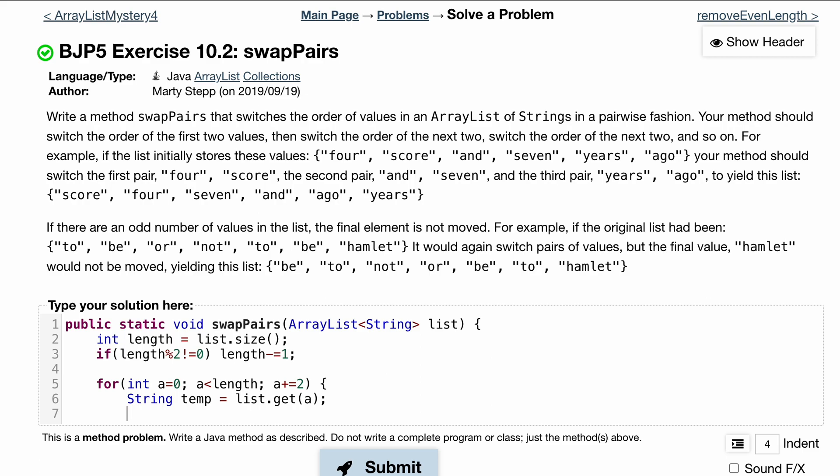Now we're going to do our swap. So we're going to do list.set and we're going to pass in the place of our current index, and we're going to do list.get but we're going to get the next index a plus one, and then we'll get the element and set it here.